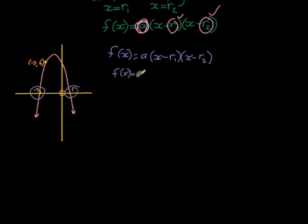So we have x minus minus 3, that gives me plus 3, x plus 3, and then we also have x minus root 2, which is 1, x minus 1.